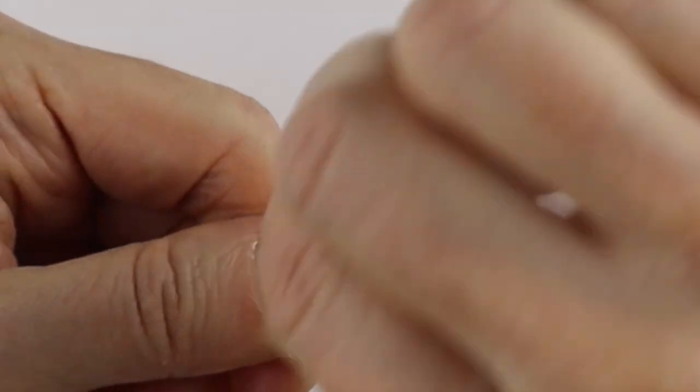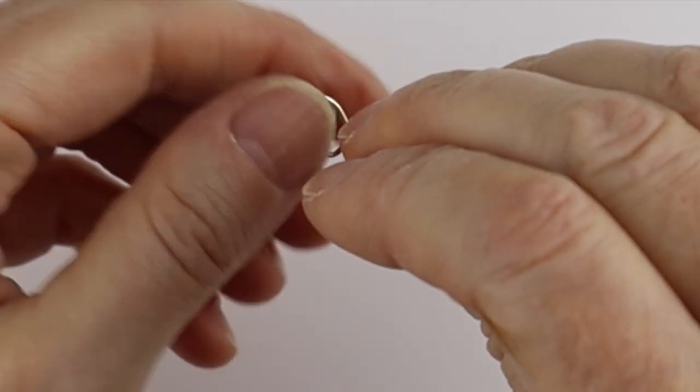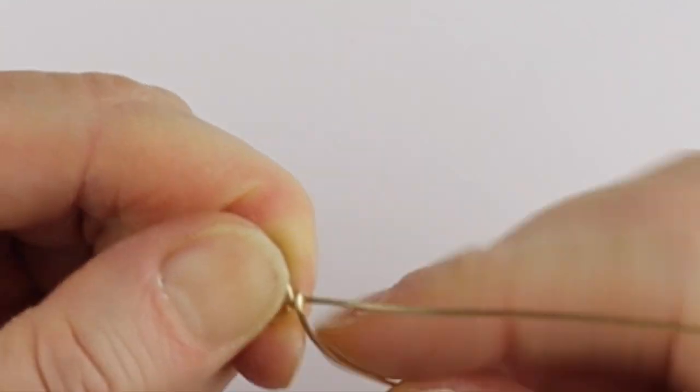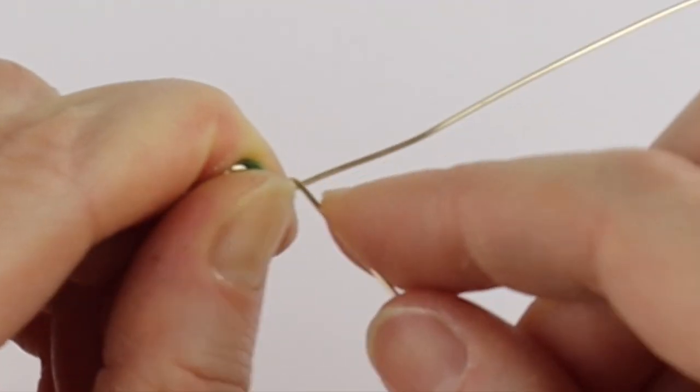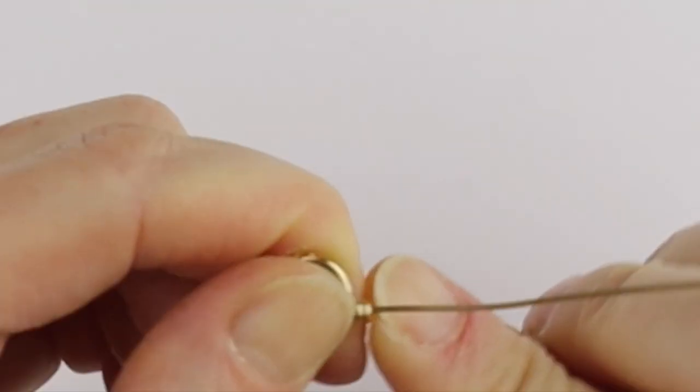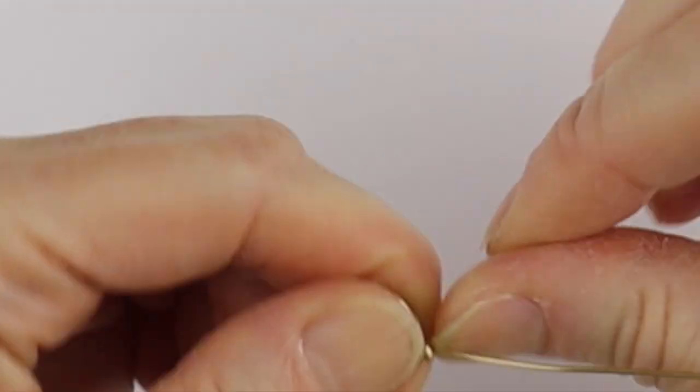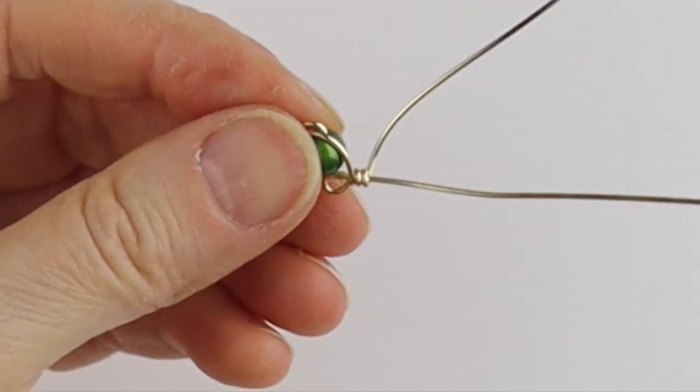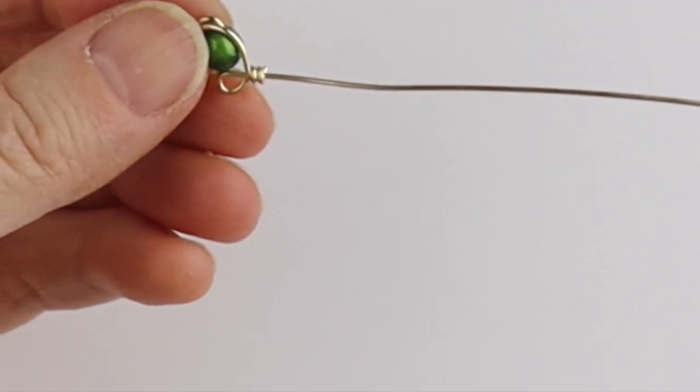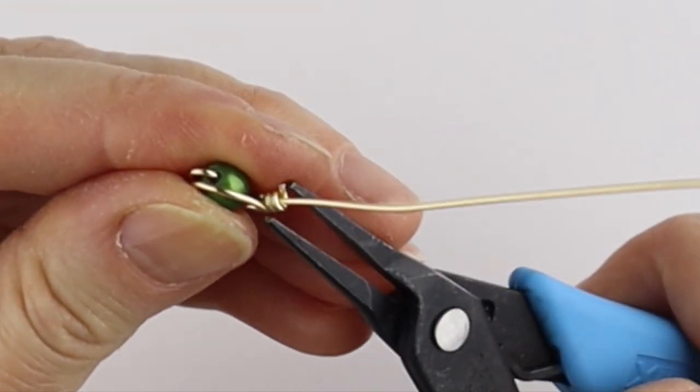That would make a cute little turtle. Take this and bend it around to secure it in place. You could coil it a couple of times just to give a suggestion of a tail. Then we'll give it a clip.